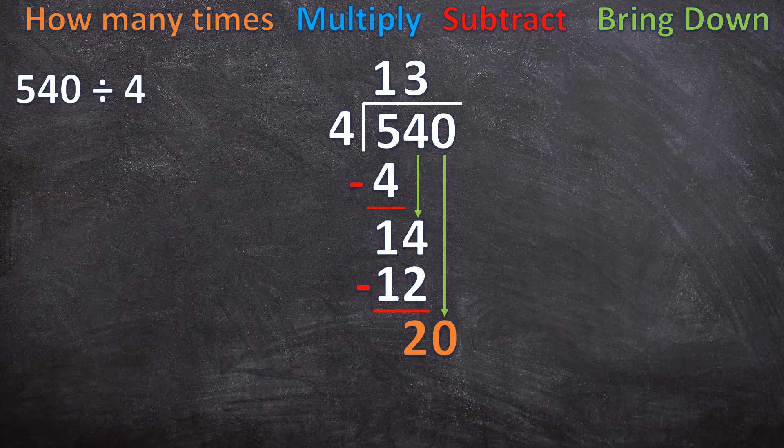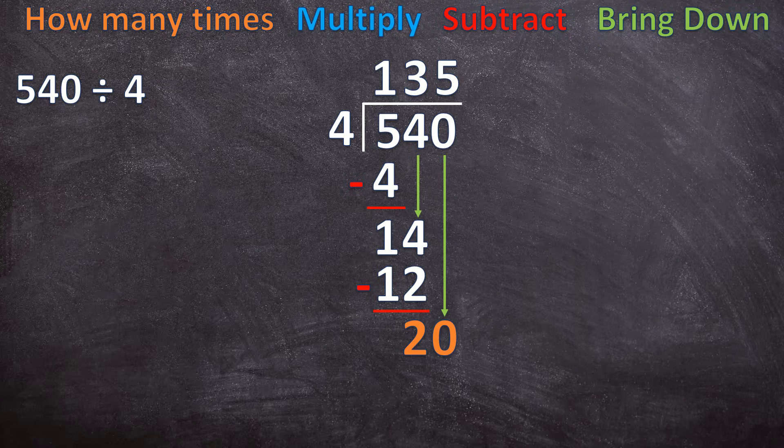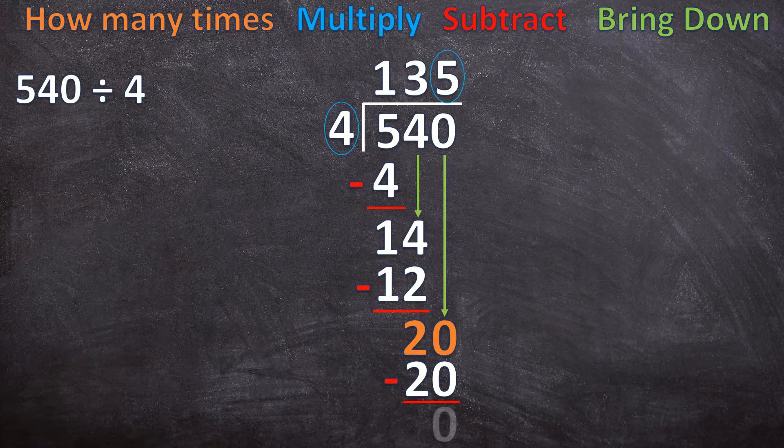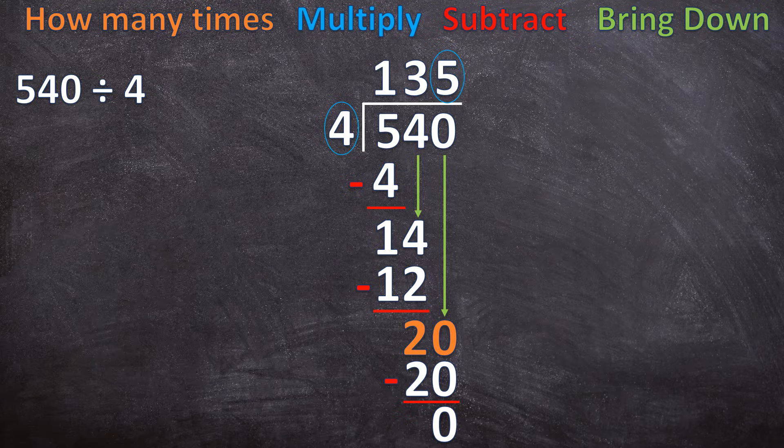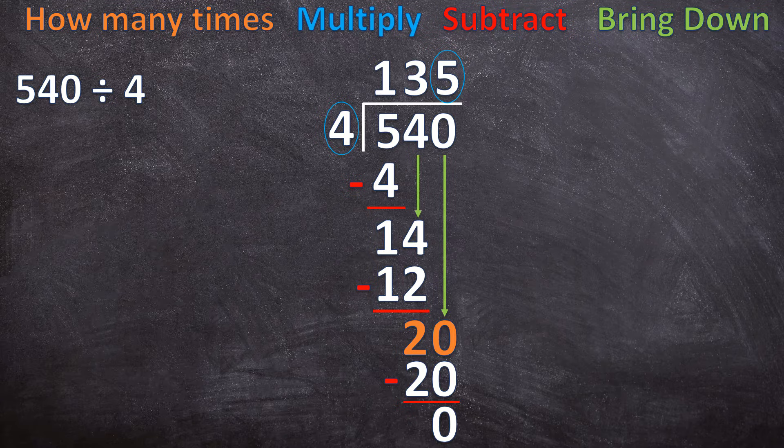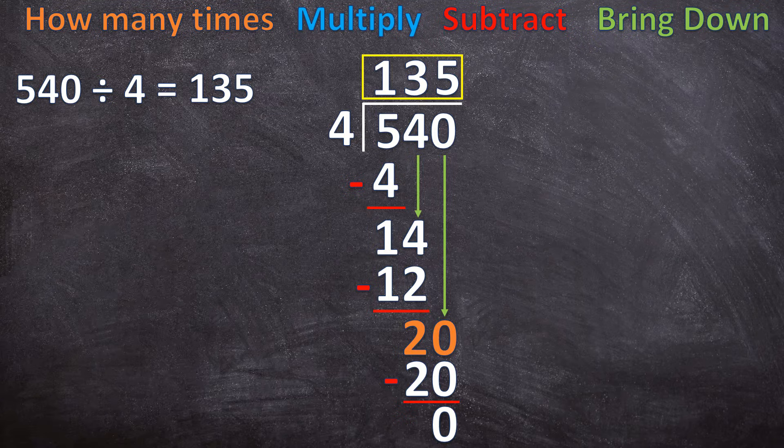Now we start all over again. How many times can four go into 20? Five times. Five times four is 20, and 20 minus 20 is zero. There's nothing else to bring down, and there is no remainder. We end it with zero. So the final answer is 135. So now let's go on to the next example.